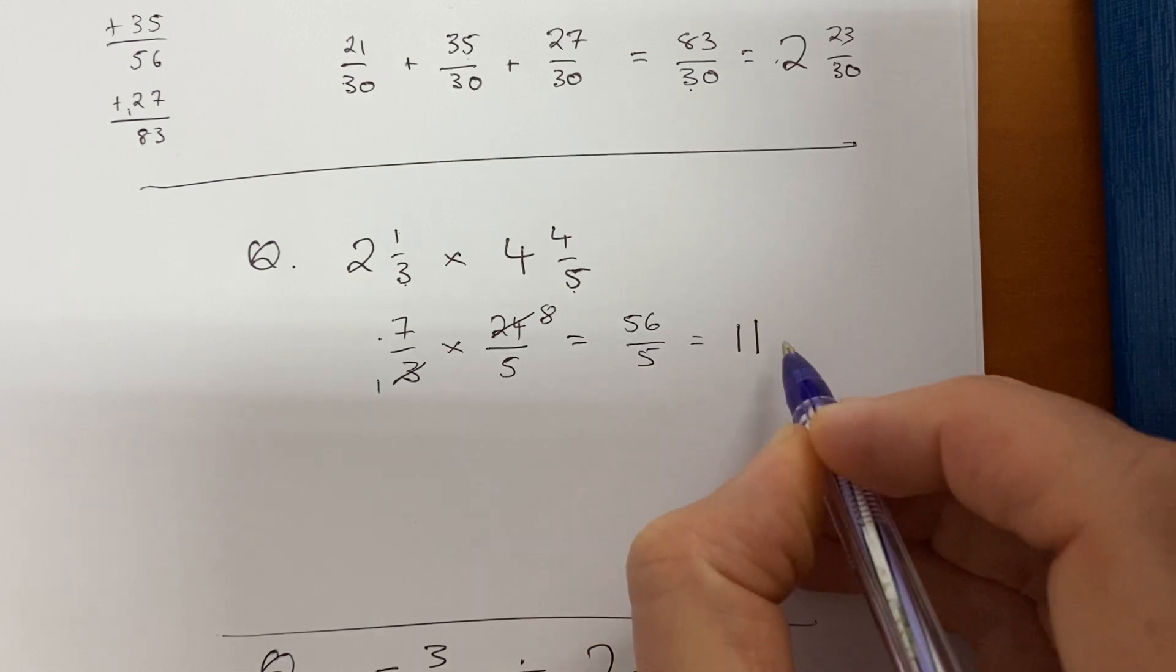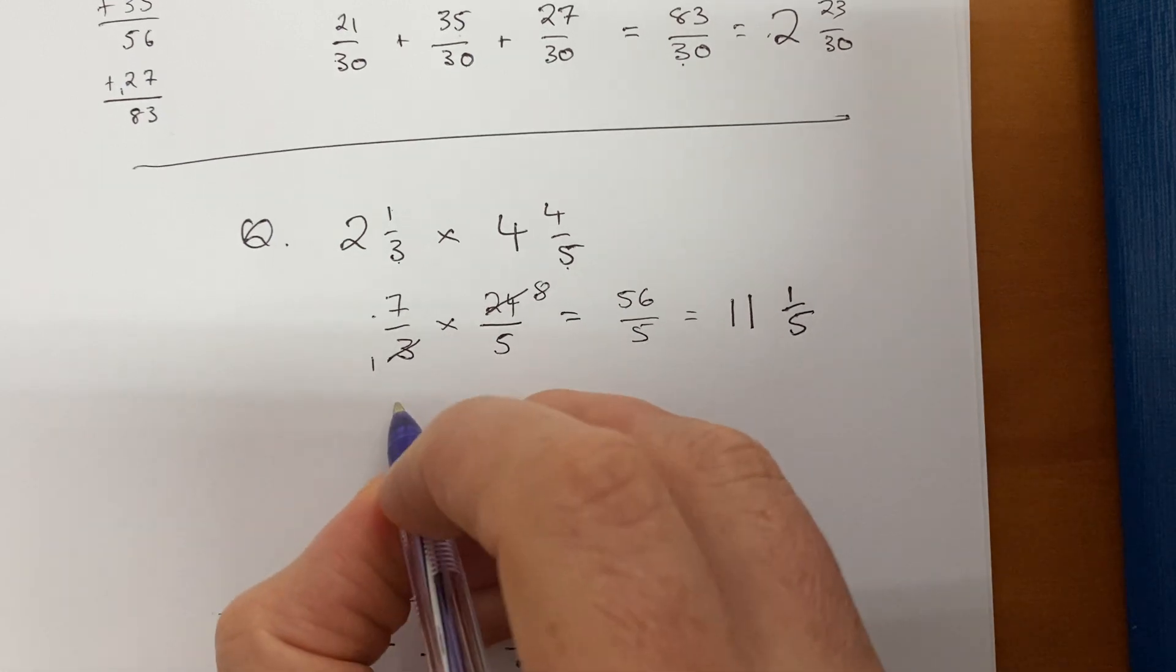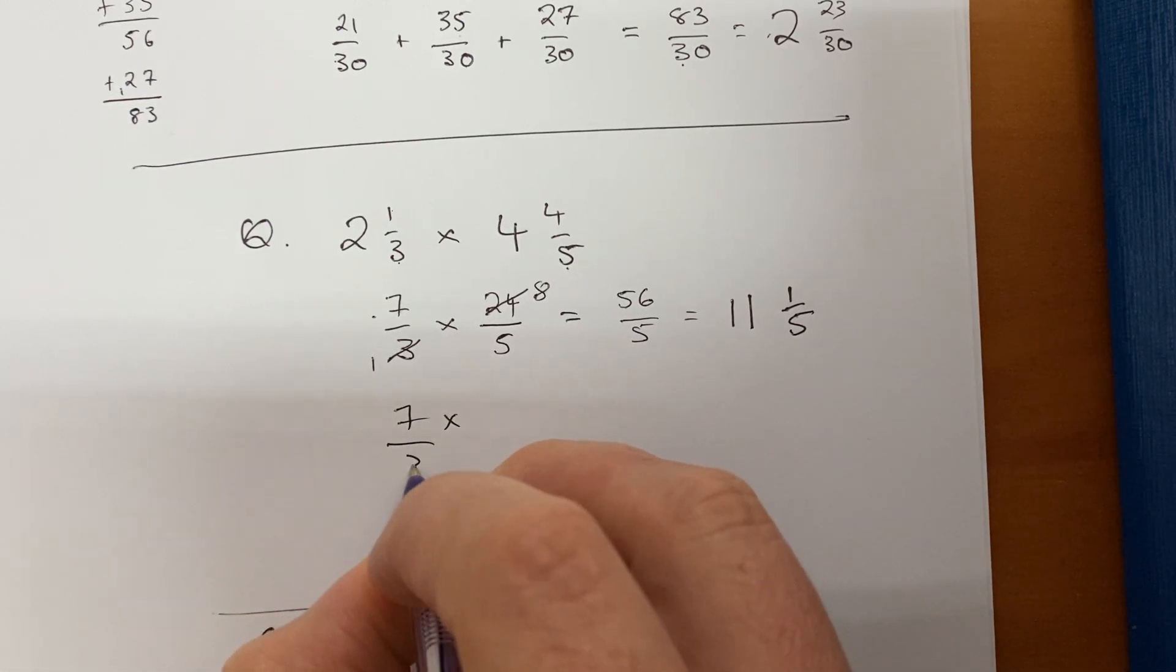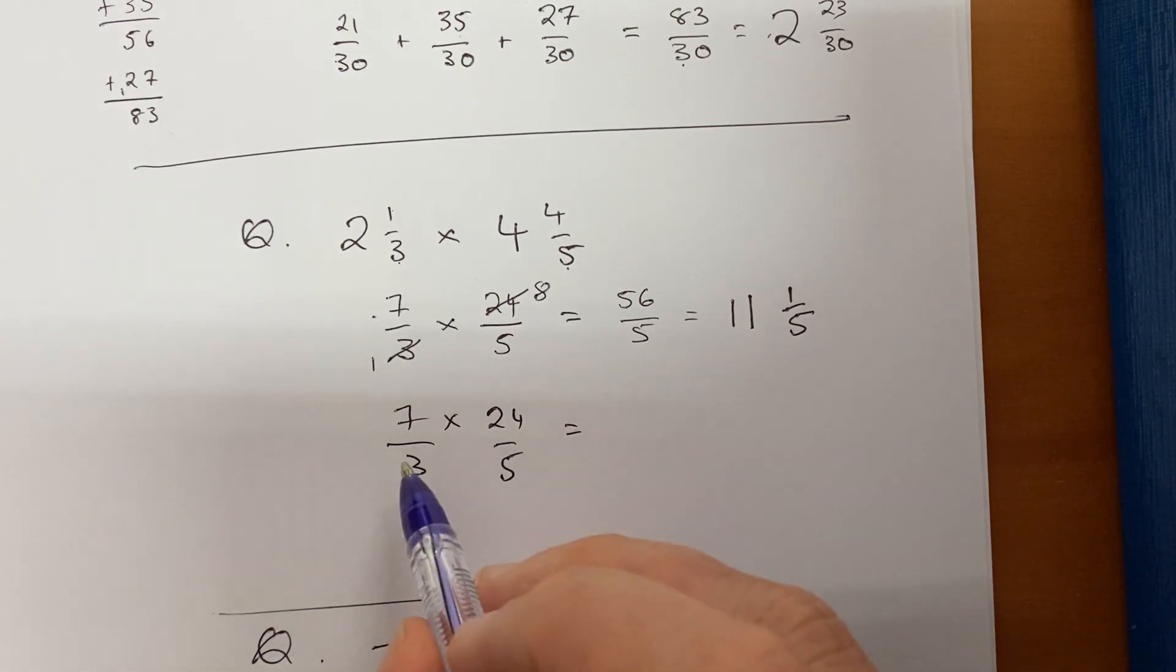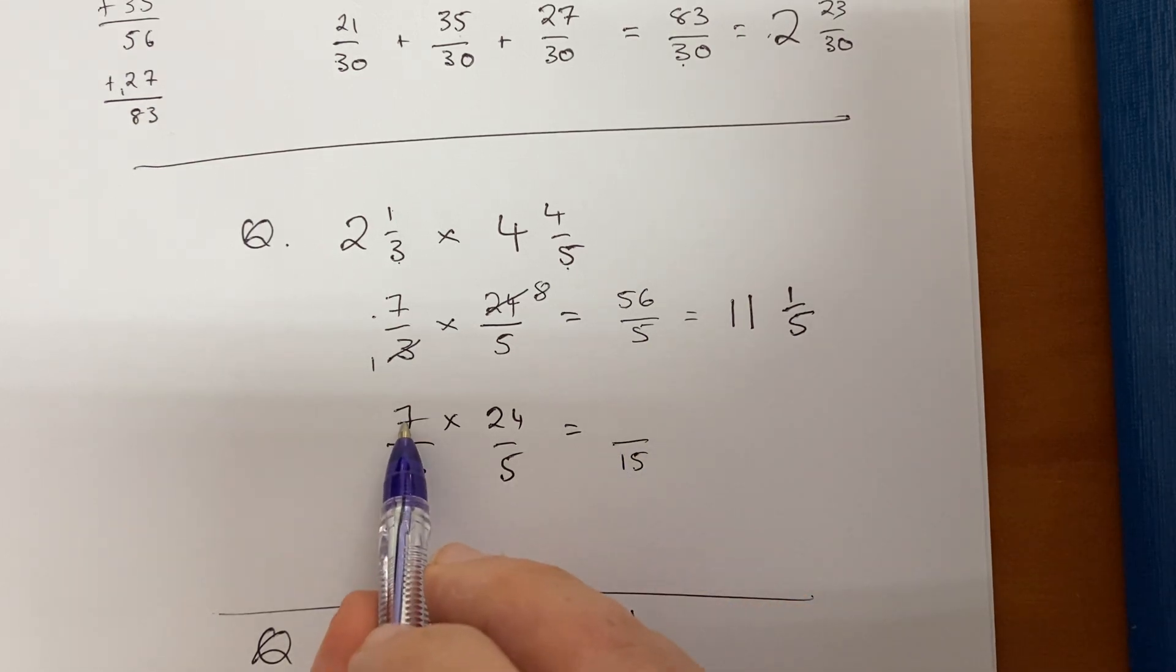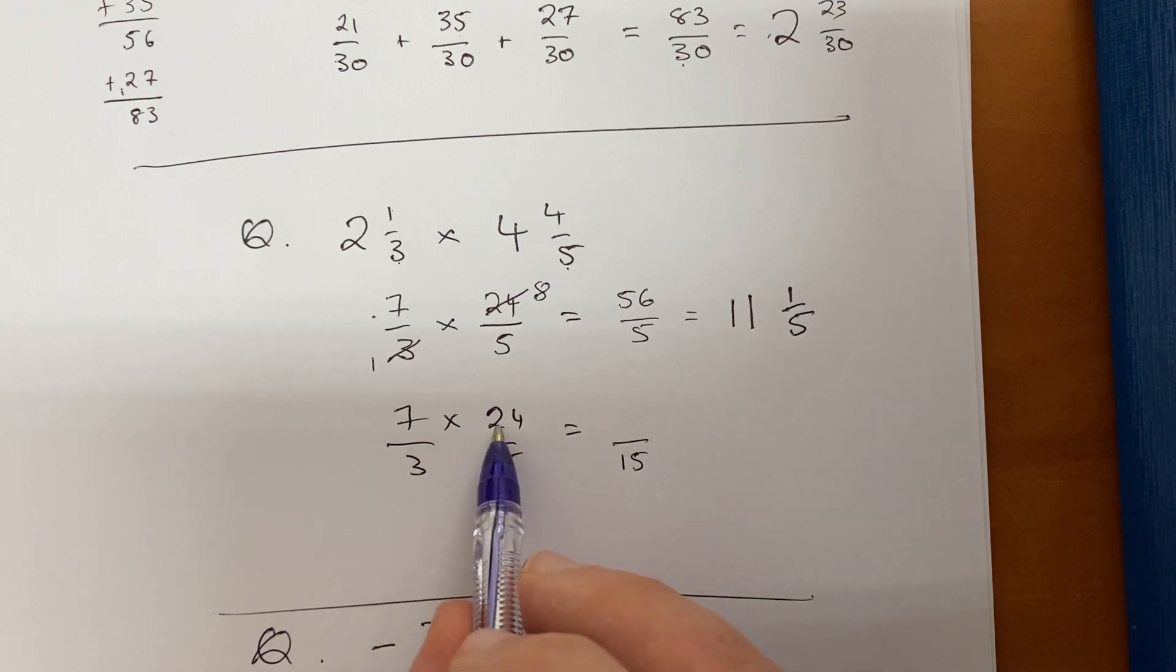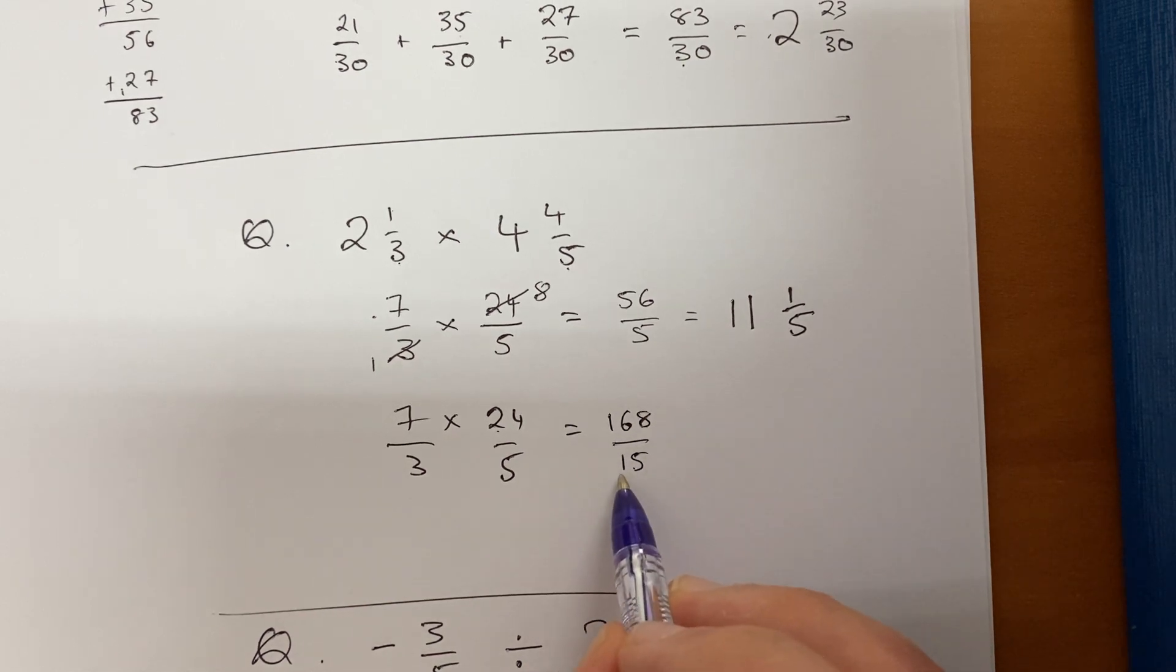And then I can convert that back into a mixed number. Five fits into 56 eleven times because 55, and one fifth. Now what would happen if I didn't simplify? Seven over three times 24 over five, do I get the same answer? Now, well I do, because you'll see what happens right. So three times five on the bottom gives 15, working in straight lines when we multiply. And seven times, okay, if I want to do this out, seven times 24: well, seven times 20 is 140, and seven times four is 28. Combine those together, I think I get 168.